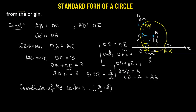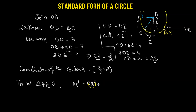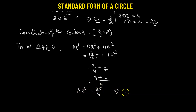Our next task is to find out the radius of the circle. In the right-angled triangle ABO, right-angled at angle B, using the Pythagorean theorem: AO² = OB² + AB². OB is 3/2, so OB² is 9/4, and AB is 2, so AB² is 4. That gives us 9/4 + 4 = 9/4 + 16/4 = 25/4. Taking the positive square root — positive because radius is a length — AO equals 5/2, which is the radius of our circle.